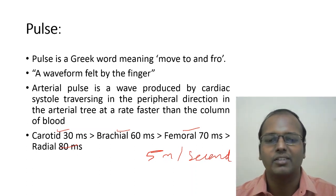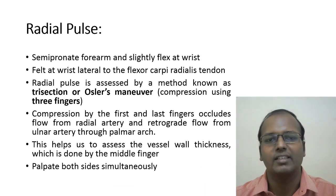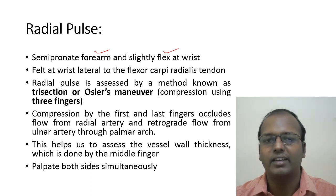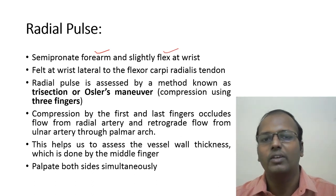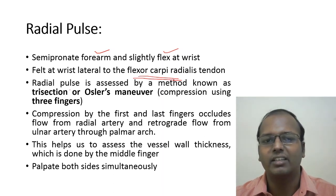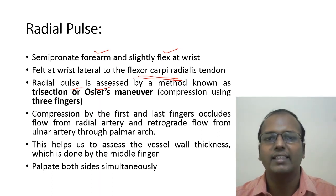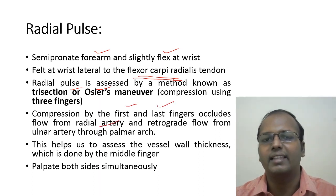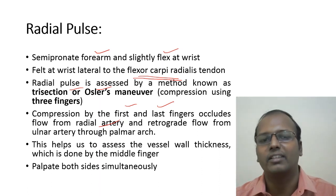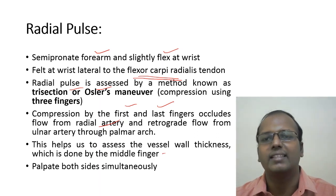The pulse we usually palpate is the radial pulse. To palpate it, semi-pronate the forearm and slightly flex at the wrist. The radial pulse is felt lateral to the flexor carpi radialis tendon. It is assessed by a method known as trisection or Osler's maneuver — using three fingers: index, middle, and ring. The first and last fingers occlude flow from the radial and ulnar arteries, allowing the middle finger to assess vessel wall thickness. Palpate both sides simultaneously.